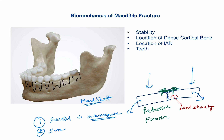For osteointegration to take place we need bone that has thick cortices. In the mandible, the surrounding part of the bone is a thick cortex, and within the cortex we have the cancellous bone. This surrounding cortex is the part where you can place the screws, where they will get osteointegrated and it can be helpful in treating these fractures.